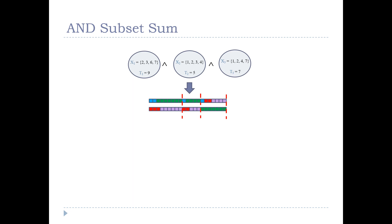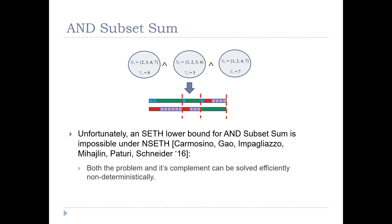If we had a good lower bound for N-subset sum, we would have a good lower bound for our scheduling problem via this reduction. Unfortunately, such a lower bound under SETH is highly unlikely, because N-subset sum and its complement can be solved efficiently in a non-deterministic fashion, and such a problem can be proven not to have a SETH lower bound under a related assumption called non-deterministic SETH. So we need a different hypothesis.